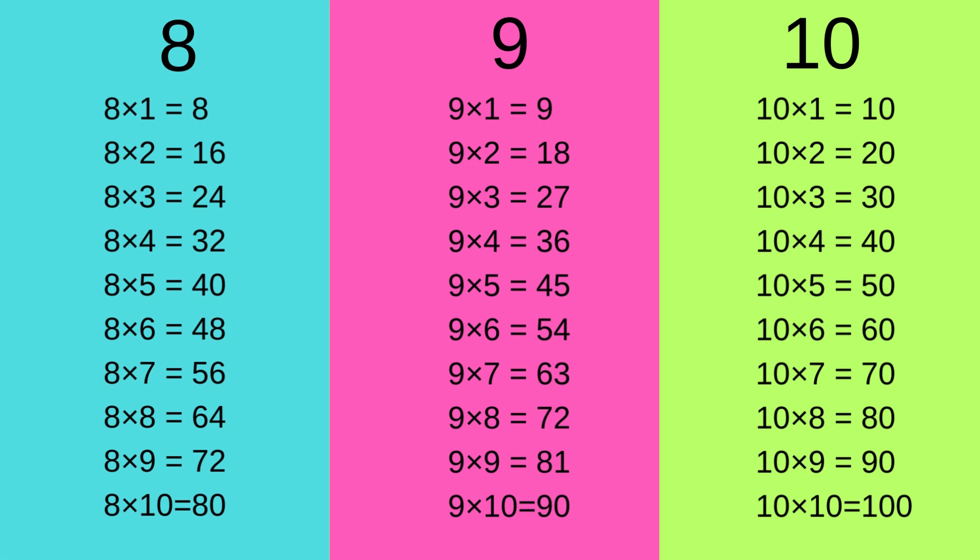Now we will do the table of 10, which is easy peasy lemon squeezy. Let us begin. 10 1's are 10, 10 2's are 20, 10 3's are 30, 10 4's are 40, 10 5's are 50, 10 6's are 60, 10 7's are 70, 10 8's are 80.